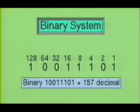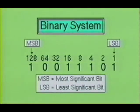The byte shown here represents the decimal number 157. We will see how we acquired the decimal number 157 from the byte illustrated — converting from binary to decimal, then from decimal back to binary. As you recall, the most significant bit is on the left, and the least significant bit is on the right. These are abbreviated as MSB for most significant bit, and LSB for least significant bit.